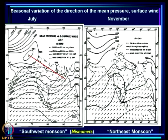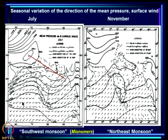This is the seasonal variation of the direction of mean pressure and surface wind from July to November. This seasonal variation is what Arabs were concerned about. The winds are from the southwest in July and from the northeast in November — these are the southwest monsoon and northeast monsoon, which I will show to be misnomers. There is also a variation in the surface pressure: a low pressure belt in July over the monsoon zone, which shifts southward equatorward in November.